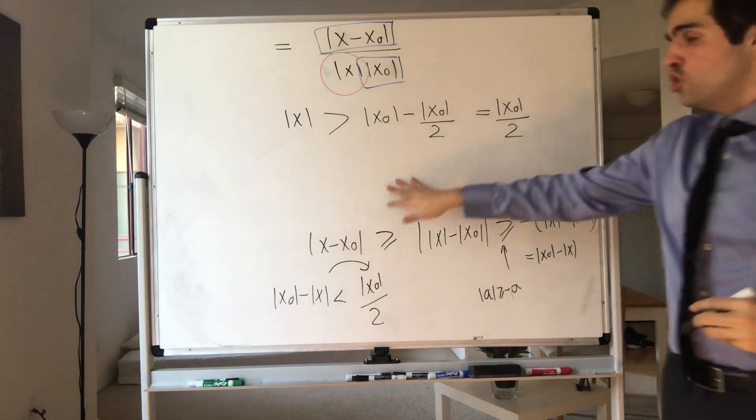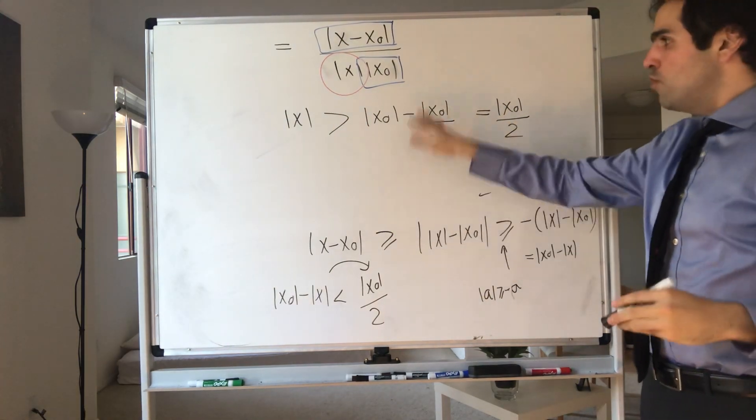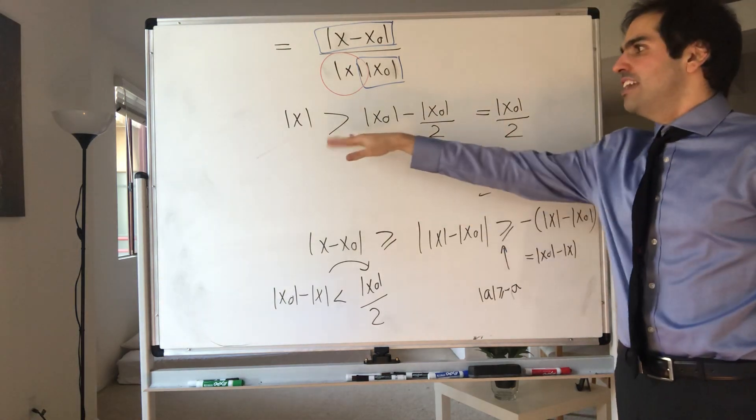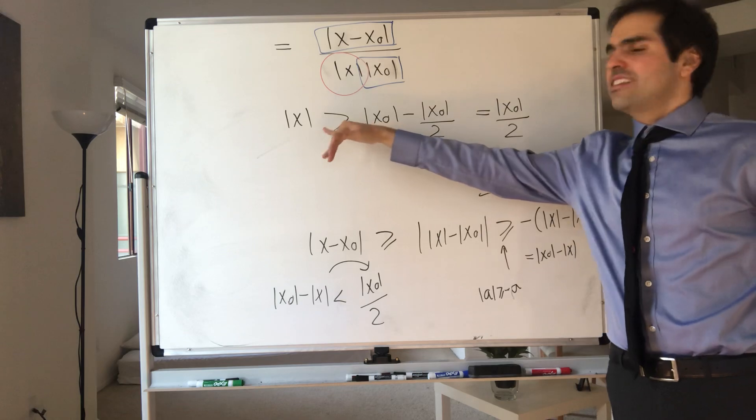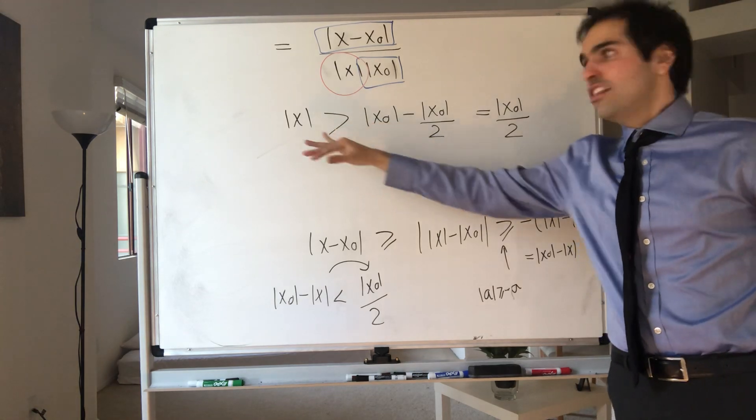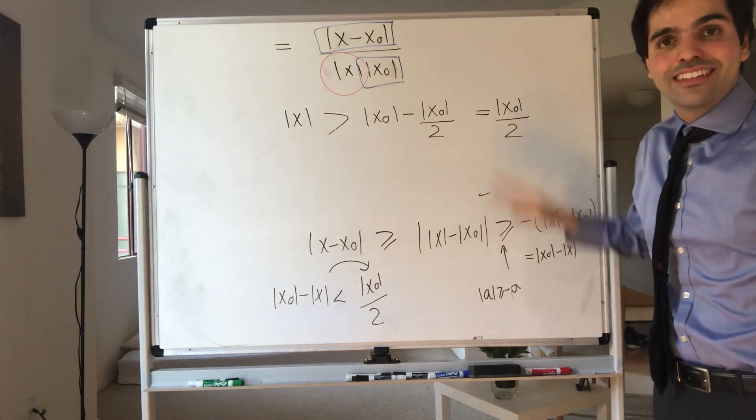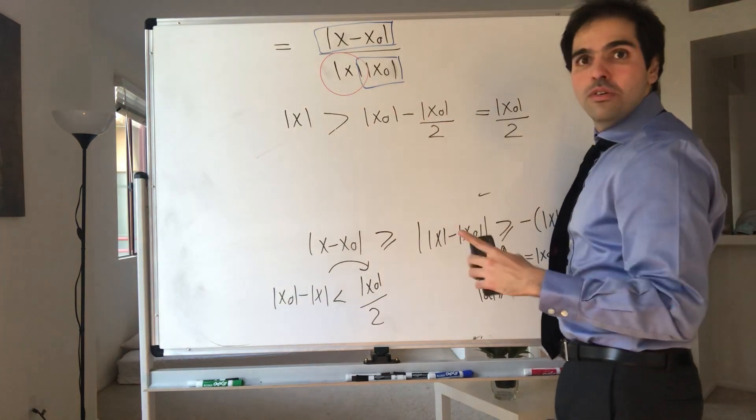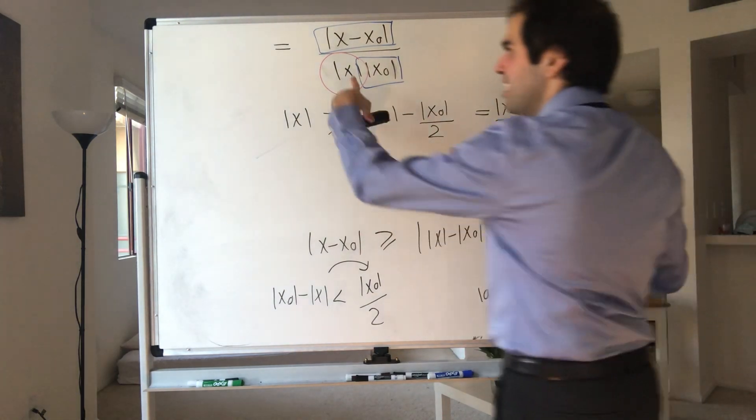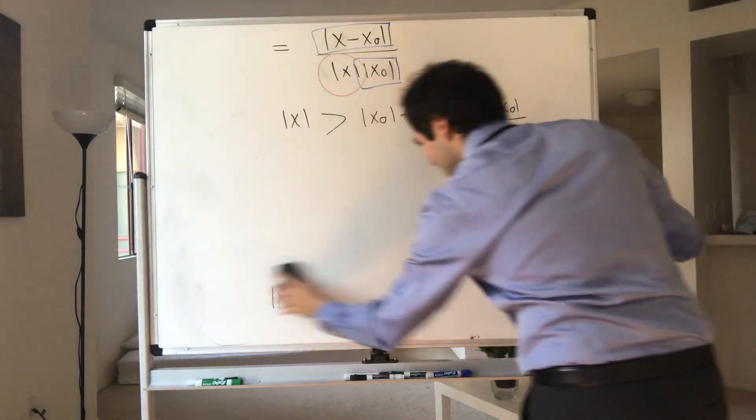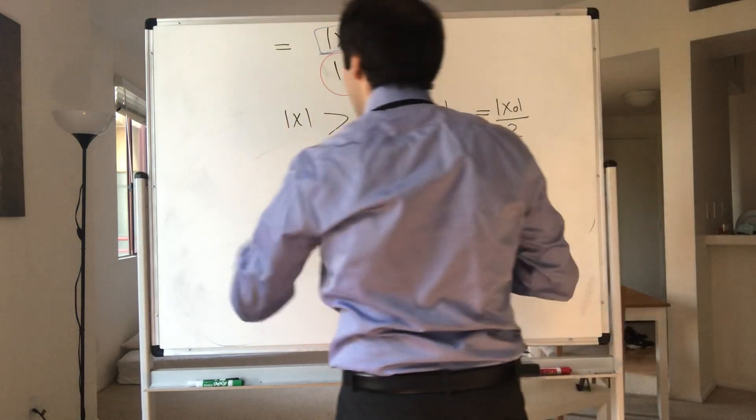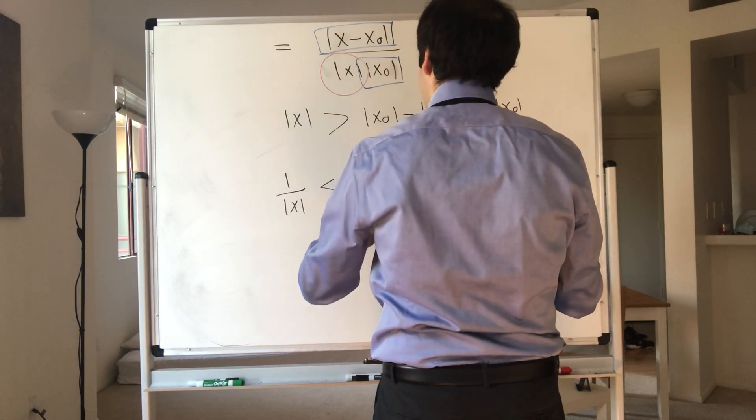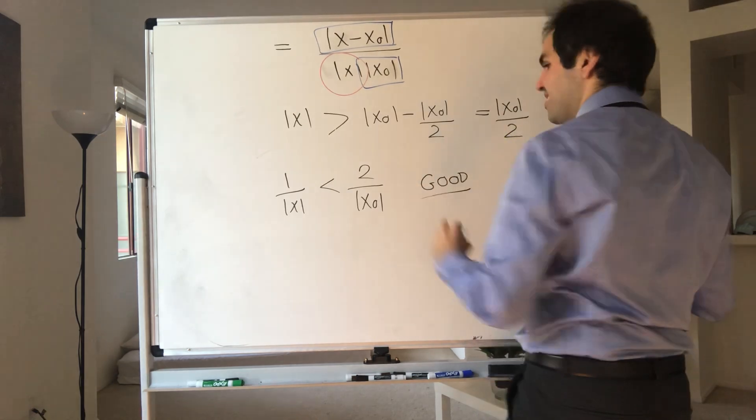And by the way, if you chose 1, we would be in trouble, because x naught minus 1 might be negative, and it doesn't tell us anything interesting. Here, we get something interesting. Absolute value of x is bigger than this positive constant. So it gives us a lot of info. You might be like, does it go the wrong way? No, it doesn't, because now let's take reciprocals. So now, 1 over absolute value of x becomes less than 2 over absolute value of x naught. And this is good.